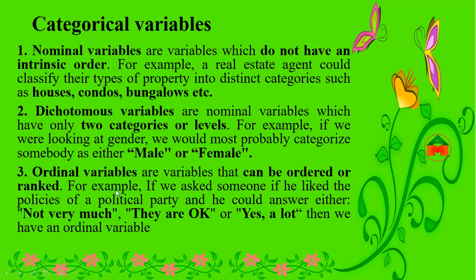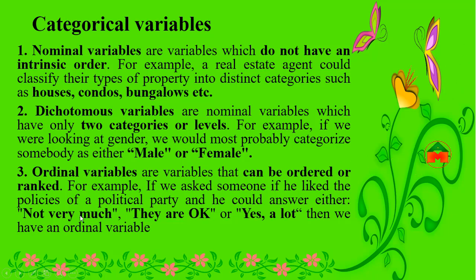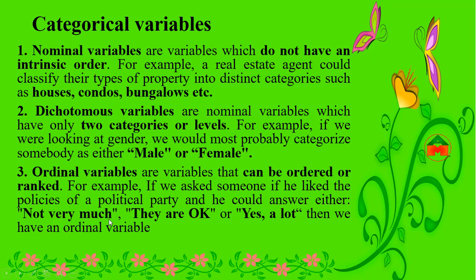Ordinal variables are variables that can be ordered or ranked. For example, if we asked someone if they liked the policies of a political party, they could answer either 'not very much,' 'they're okay,' or 'yes, a lot.' This is an ordinal variable because these three answers have an order. Nominal, dichotomous, and ordinal variables are all known as categorical variables.